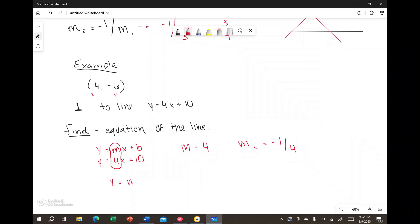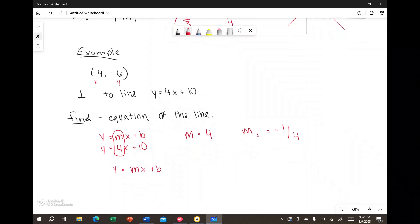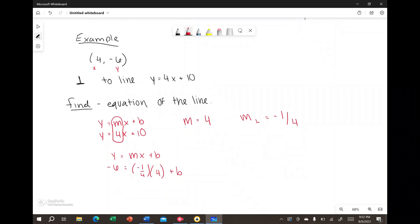And we have a known point which is x and y. These are our coordinates, given to us as 4 and negative 6. And then the only unknown here is b, which is the y-intercept as I introduced in the previous video.